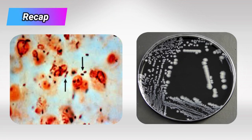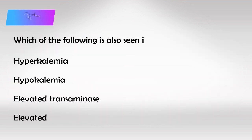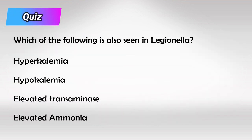To recap: the bacteria is stained by silver stain and cultured on charcoal agar; the bacterial antigen is present in the urine for diagnosis. Transmission must be from an infected water or air source — there is no patient-to-patient transmission. The hallmark is hyponatremia, treatment is with macrolides or fluoroquinolones, and the main complication is Legionnaire's disease.